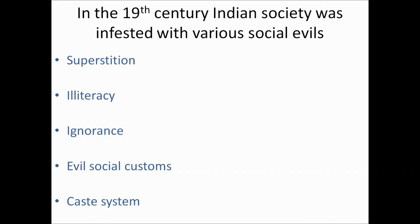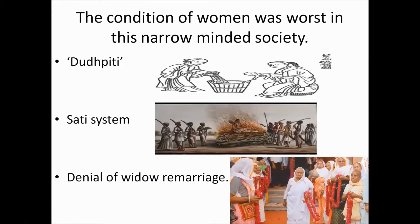The condition of women was worst in this narrow-minded society because there were so many customs and cultural practices prevalent that harmed women. One example is Dhudhpithi — female infanticide by immersing a newborn girl child into a container full of milk. Here you can see the container which is full of milk, and the newborn girl child was being dipped into it and killed.